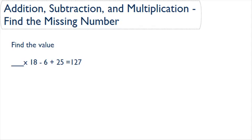Now let's talk about how to find the missing number in a problem that involves addition, subtraction, and multiplication. Here our problem says that some number times 18 minus 6 plus 25 will equal 127.